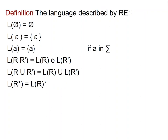The language described by the RE is what you would expect. The language of the empty-set RE is the empty set. The language of epsilon is the set containing epsilon. The language of a is the set containing a. The language of the concatenation, union, and star is the concatenation, union, and star of the languages respectively.